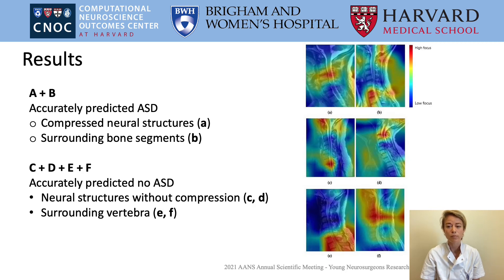It appeared that the compression of neural structures was the main risk factor identified by the deep learning algorithm.